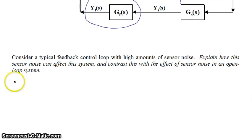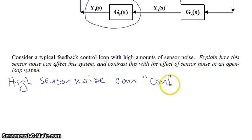So here's the thing. Here's the problem with a sensor noise in a closed loop system. It's that high sensor noise can confuse the controller.